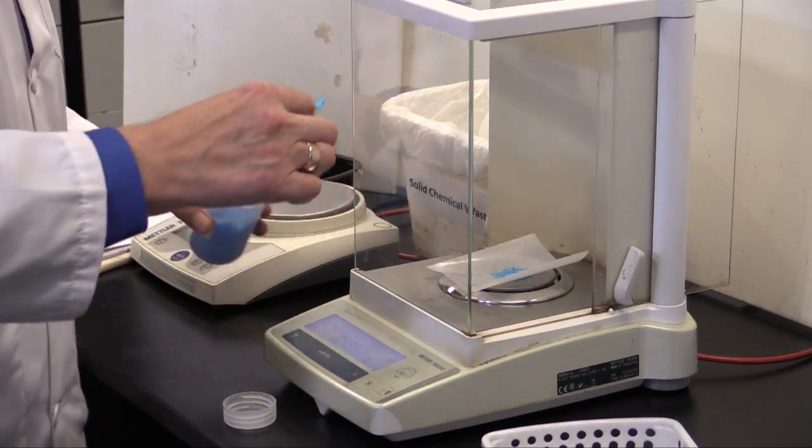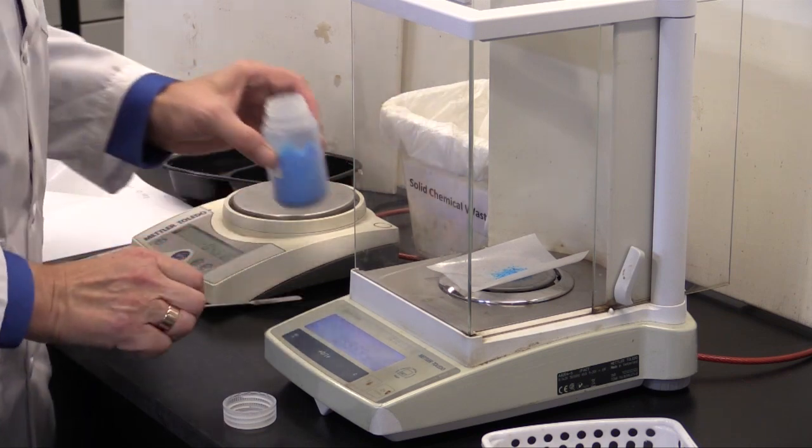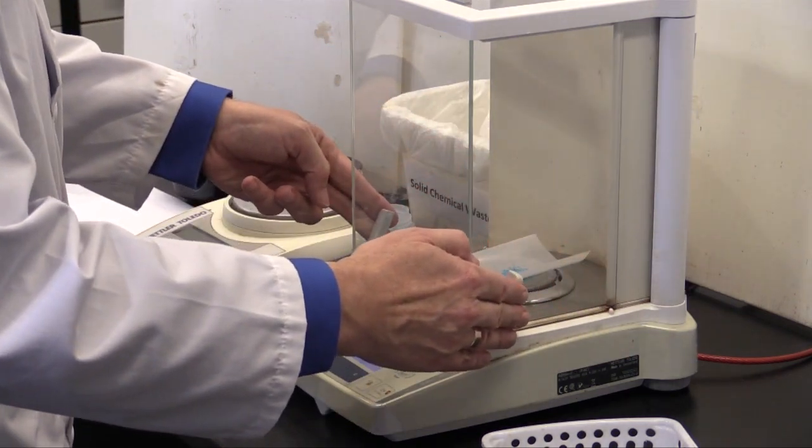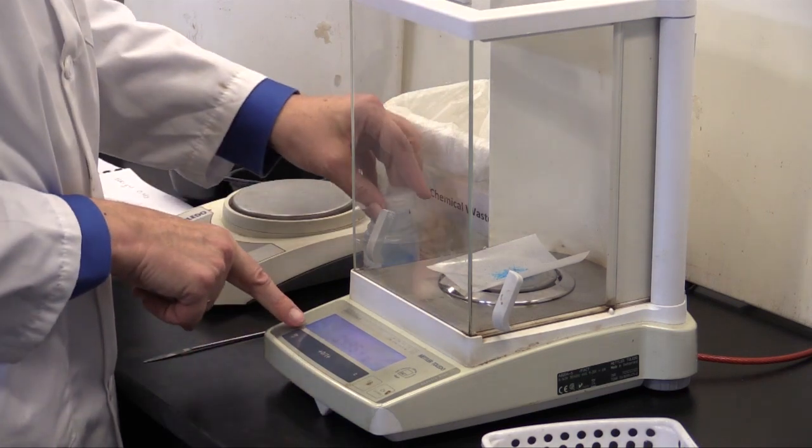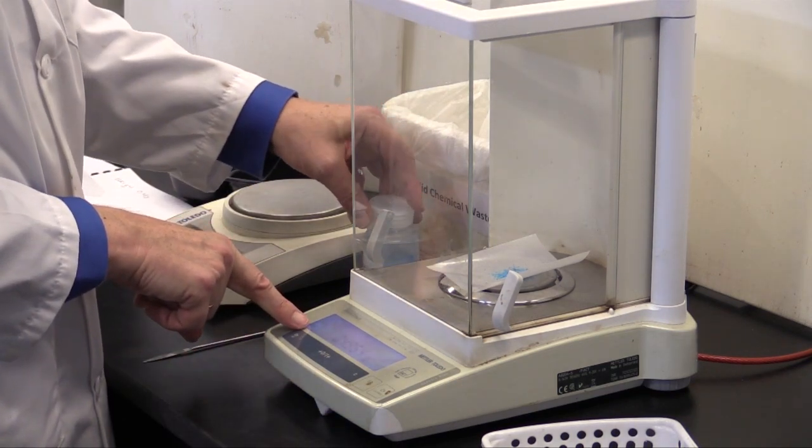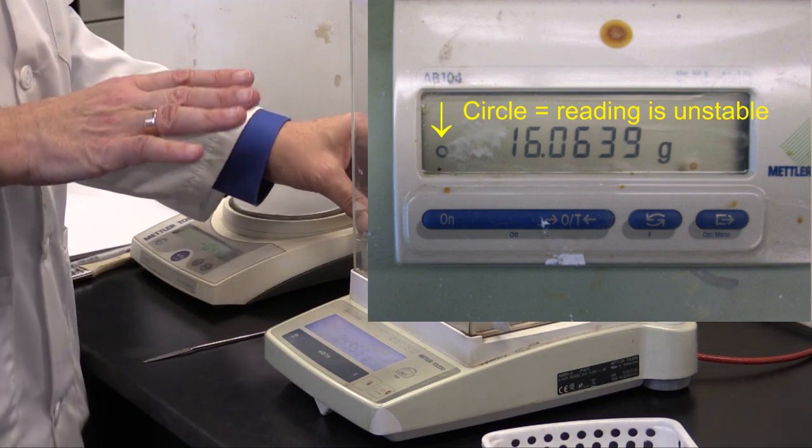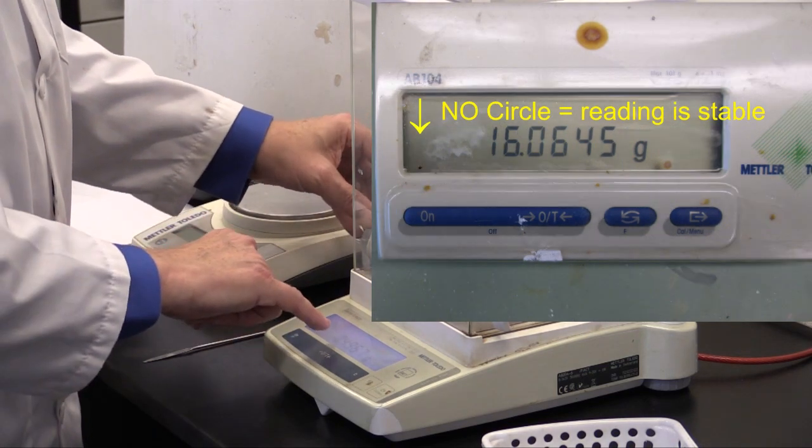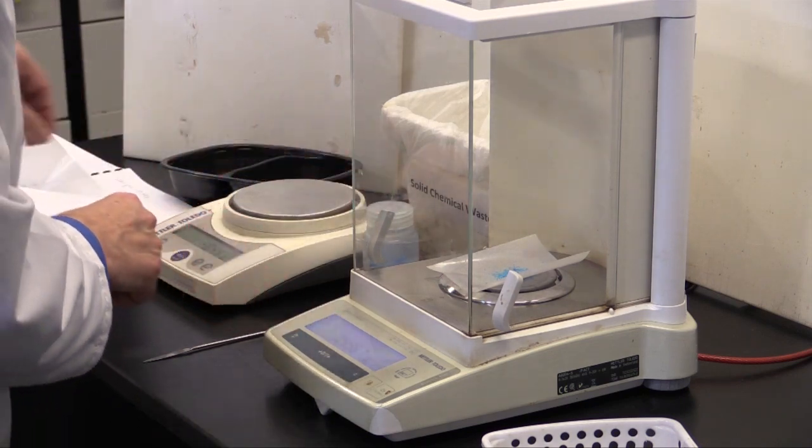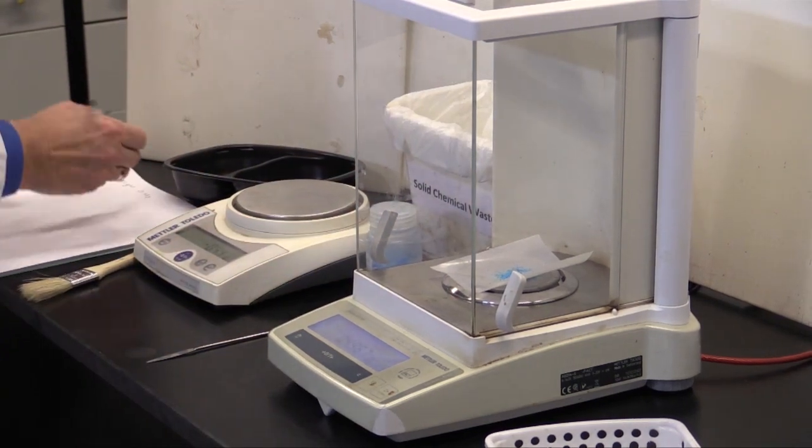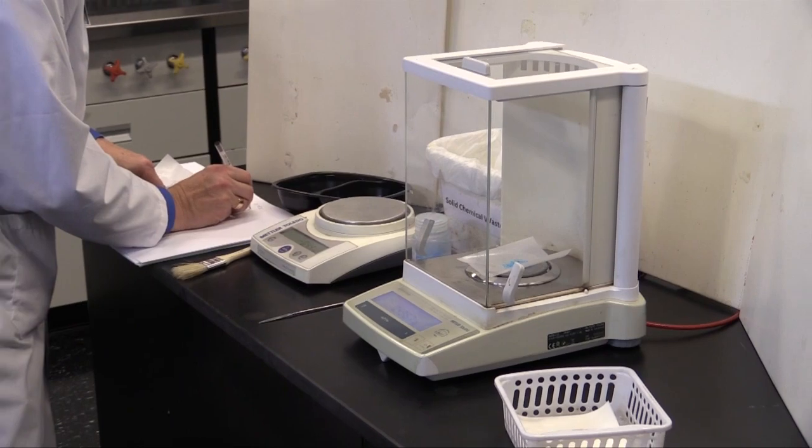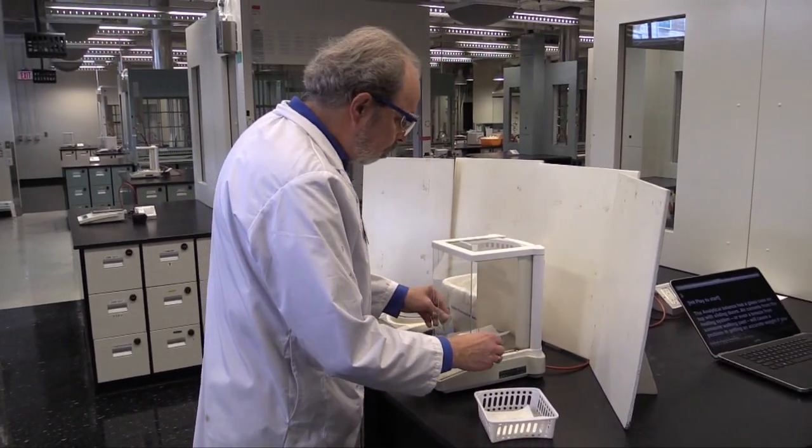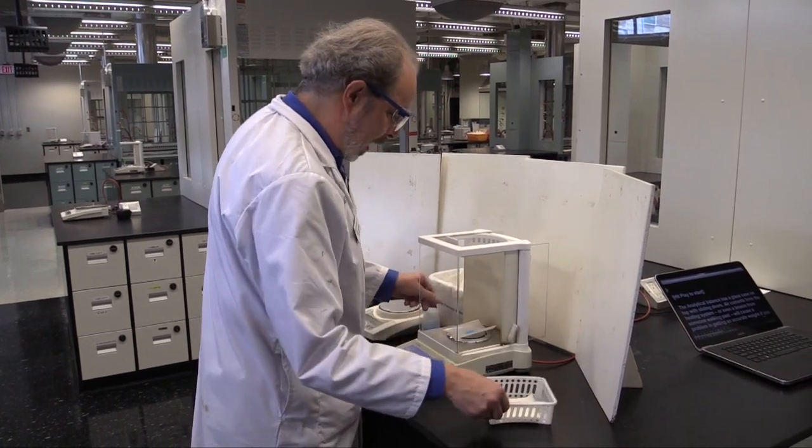And again, it doesn't go back into the bottle, but rather into the solid waste container. Now I close this and wait until this zero circle here goes away. When the circle is present, it's an unstable reading. When the circle goes away, it's ready to read. And that's 0.4967 grams. And again, write that down, 0.4967 grams.